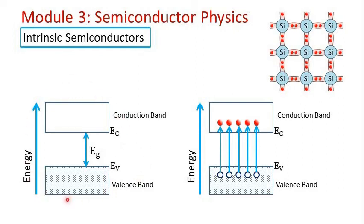In this diagram, the lower filled bands and upper empty bands are not shown because they do not participate in conduction. This is the uppermost filled band, called the valence band, and this is the lowest empty band, called the conduction band. EV is the energy level denoting the top of the valence band, EC is the energy level denoting the bottom of the conduction band, and EG — the energy gap — equals EC minus EV.